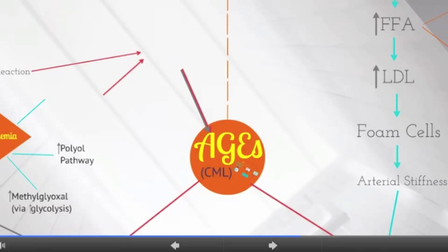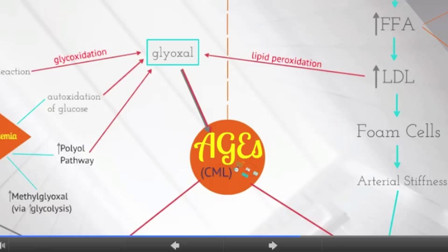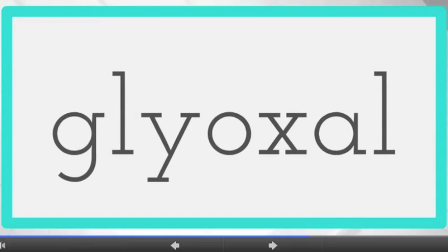This AGE can be formed through glycoxidation, autoxidation of glucose, or the polyol pathway when intracellular glucose levels are elevated from carbohydrate metabolism, or through lipid peroxidation from increased oxidation of fatty acids and LDLs. Each of these mechanisms has a central AGE precursor in common: the reactive carbonyl glyoxal. A build-up of these reactive carbonyls is sometimes referred to as carbonyl stress.